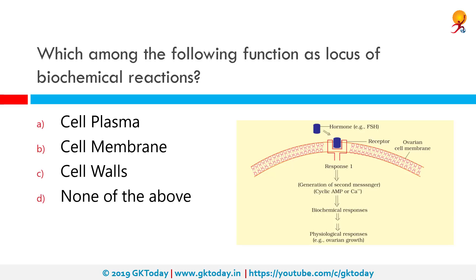Which among the following functions as the locus of biochemical reactions in the body? The correct answer is the cell membrane. The cell membrane holds enzymes of sequential reactions in close proximity; hence all the chemical reactions happen at the cell membrane.